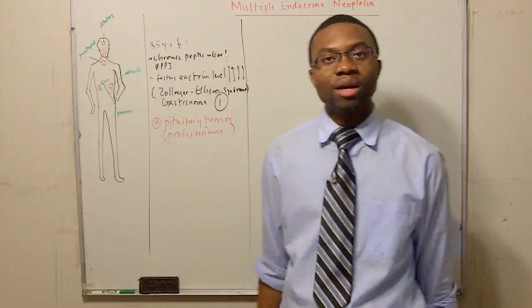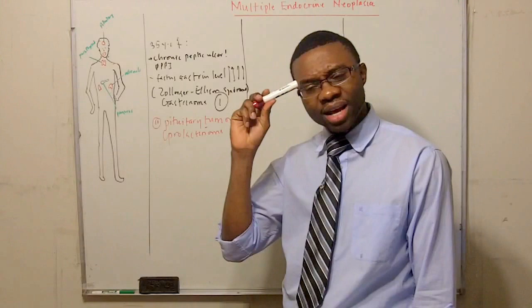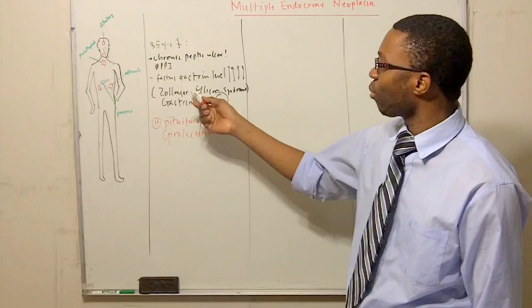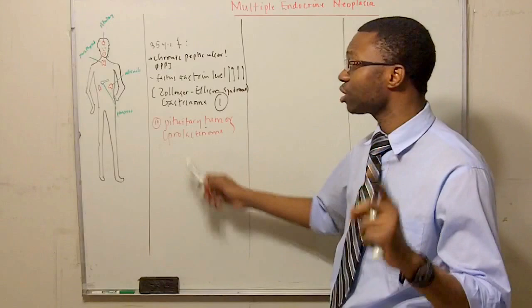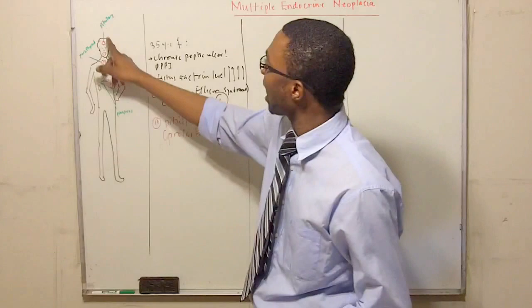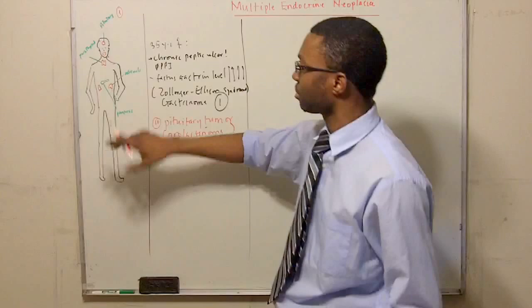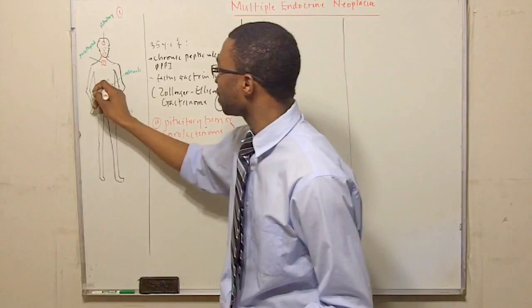So before she walks out of the office, I'm thinking in my head, oh, on the board exam, this is how they are going to ask you. She has Zollinger-Ellison syndrome. That's one thing we just diagnosed it. She has a pituitary tumor. What other tumor can she possibly have? So she had a pituitary tumor. That was one, right there. And she had a gastrinoma coming from my pancreas, a pancreatic tumor.